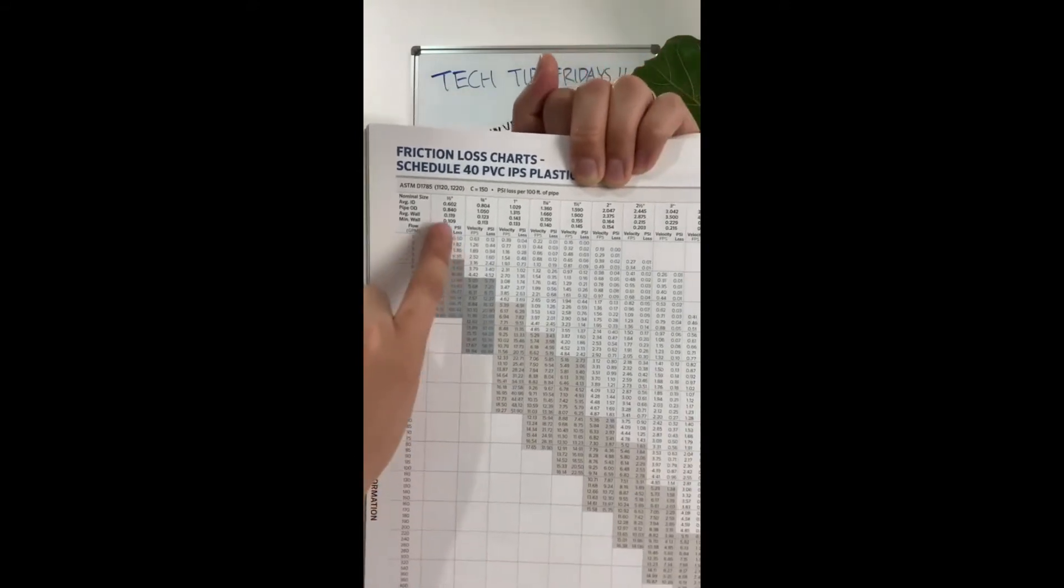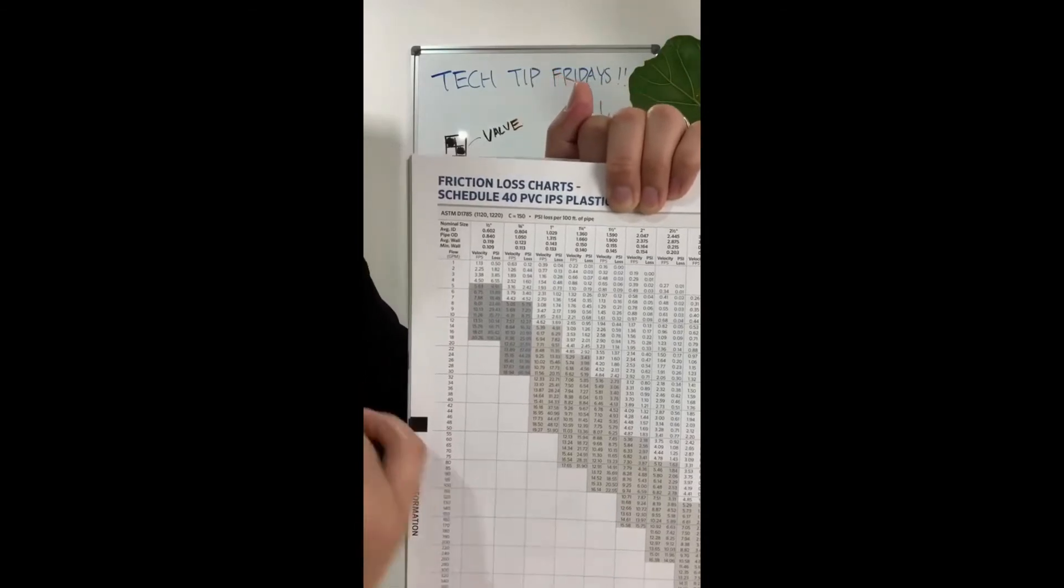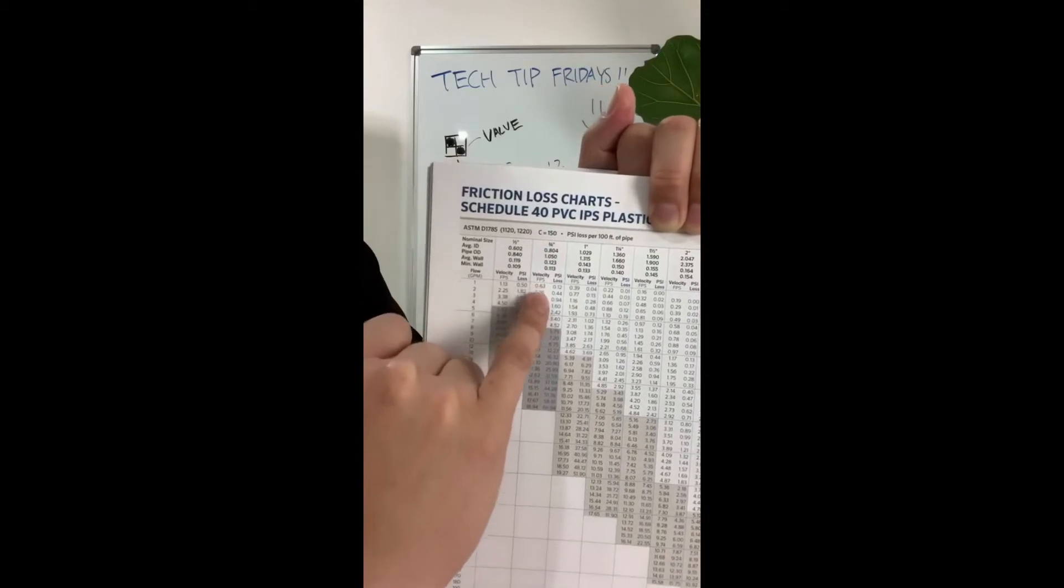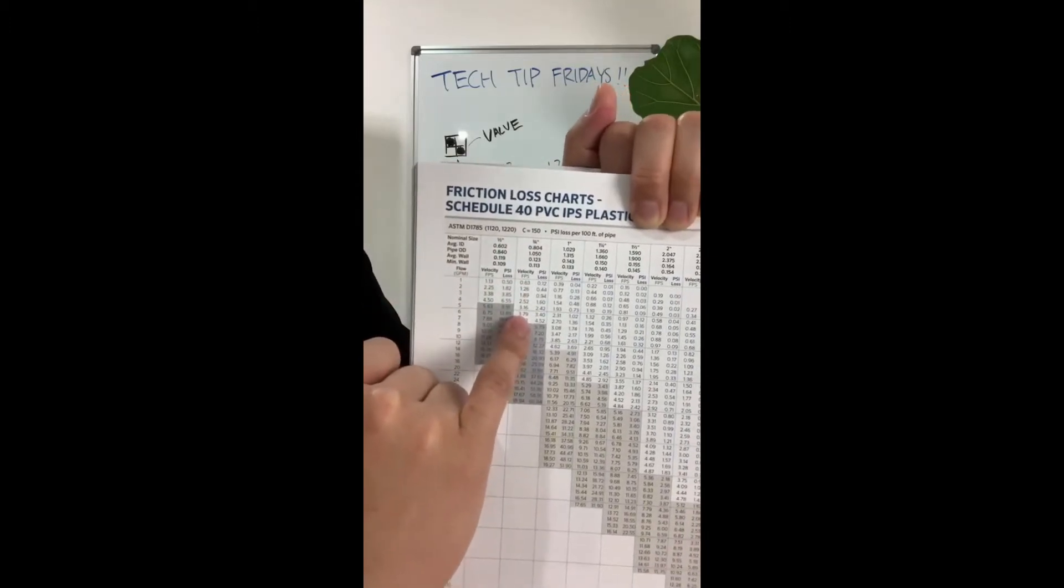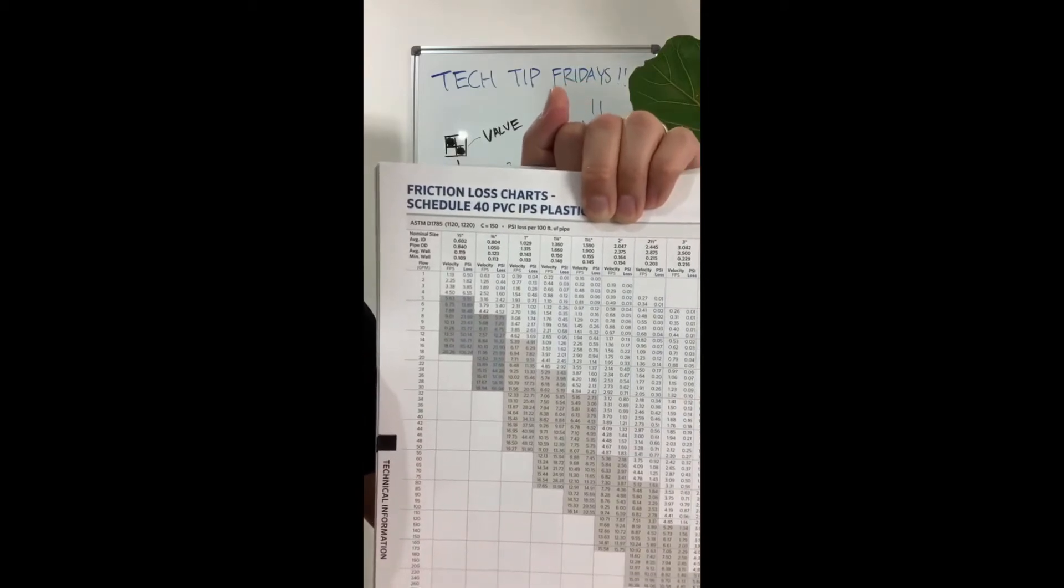Now if you scroll across your 3 quarter inch pipe, when we create our little cheat sheet located on the board, you'll see that 3 quarter inch pipe can go from 1 to 6 GPMs. Notice I didn't go to 7 because we don't ever want to max out our system.